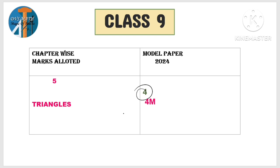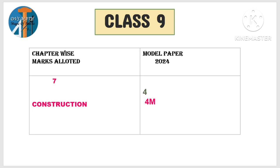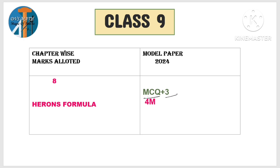Lines and angles: 9 marks weightage. Coming to construction. Next — Part 2 begins. Heron's formula: MCQ and 3 marks question, so total 4 marks from Heron's formula. This is also an easy chapter based on formula.